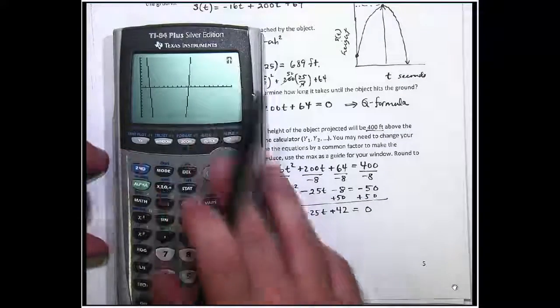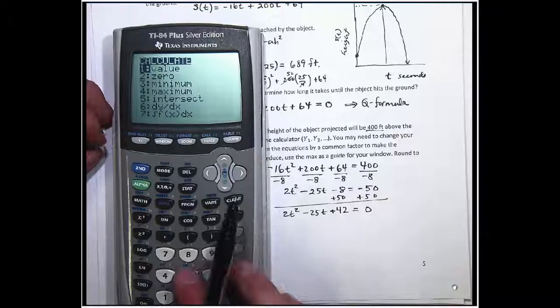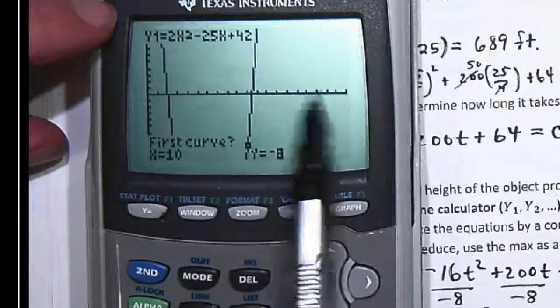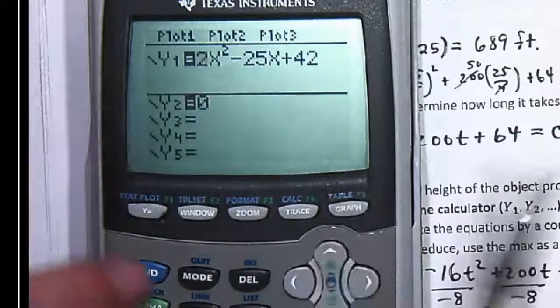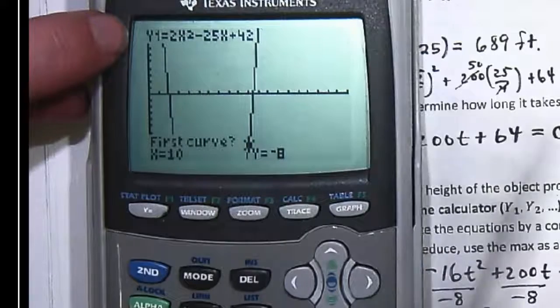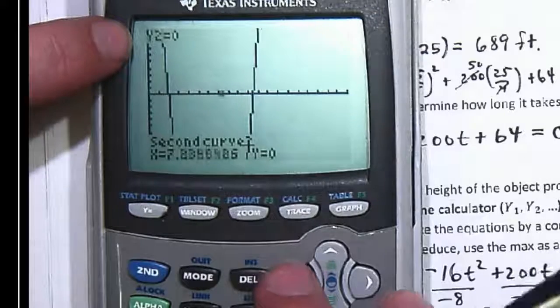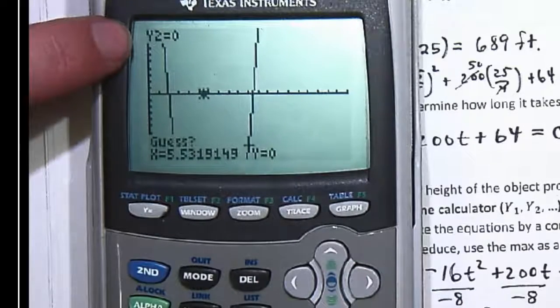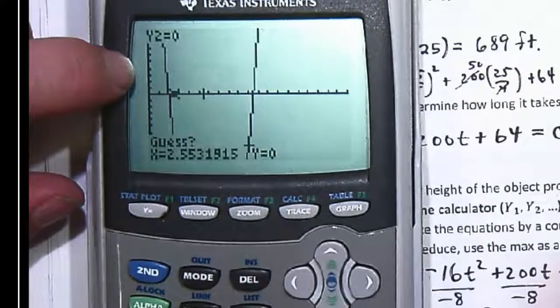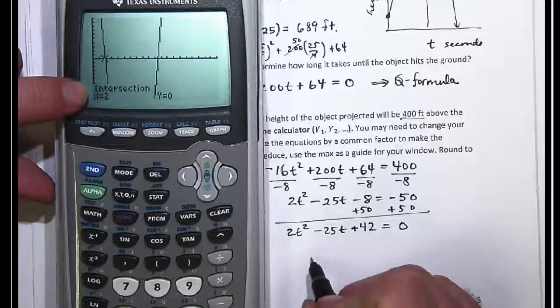To find them I hit second, calculate, I want the intersections. And I'm doing intersection because there's actually a line you can't see on there, it's y equals zero. So I can do second calc intersection because there's actually two lines on there. Y1 is this line, I'm going to select that by hitting enter. Y2 is this other line, you can see I'm on the x-axis. I'll hit enter. Now it's going to ask me to make a guess. If I want this one I'll guess near that one. If I want the other I'll guess near that. So it's telling me at two seconds. So one of the answers is two seconds.